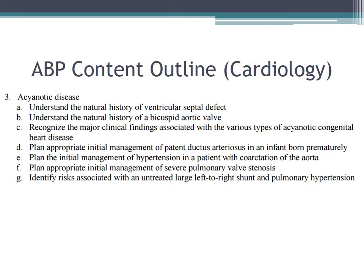With regard to acyanotic heart disease, you'll have to be aware of VSDs, bicuspid aortic valves, and different clinical findings associated with acyanotic congenital heart disease. You'll have to know how to manage PDAs in premature infants, deal with hypertension, how to deal with patients with severe pulmonary stenosis, and how to understand the risks of patients with untreated left-to-right shunts and resulting pulmonary hypertension.